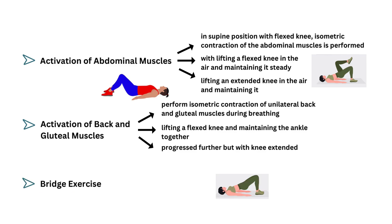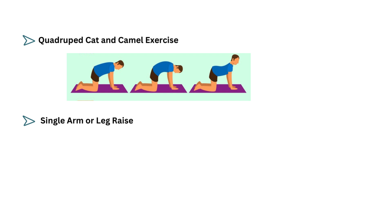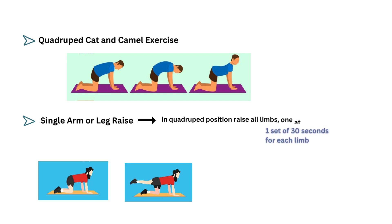The bridging exercise is later converted to a single leg bridge exercise. Cat and camel exercise is also performed. Single arm or leg raise — in quadruped position, raise all limbs one at a time and maintain the position.